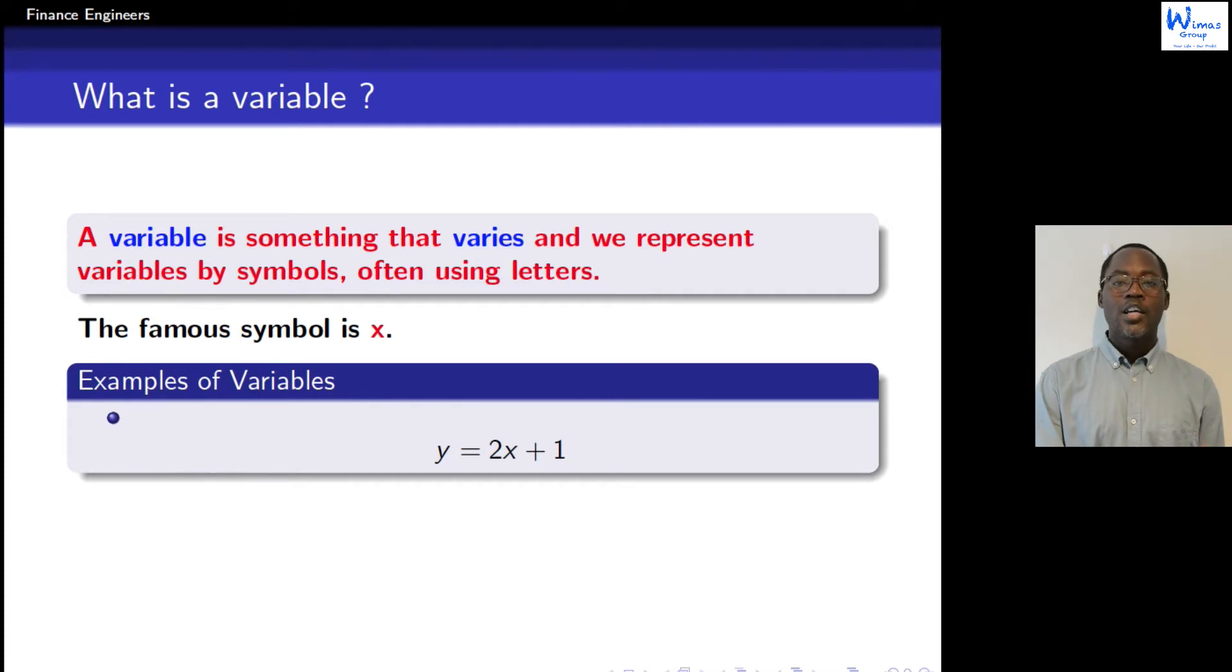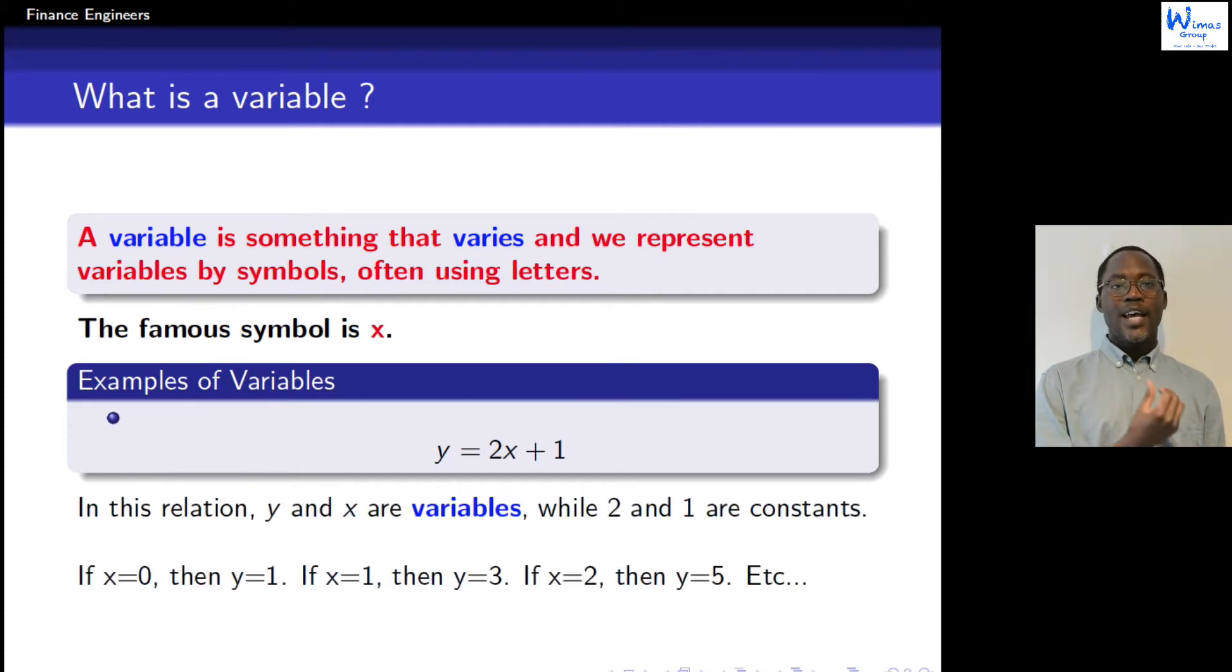Here in this relation we have y and x, they are variables, while 2 and 1 are constants. They are fixed, they are not changing. But we can change x because it's a variable. If we replace x by a number, a constant, you see y also will change. So variables they can take either one value or many values.